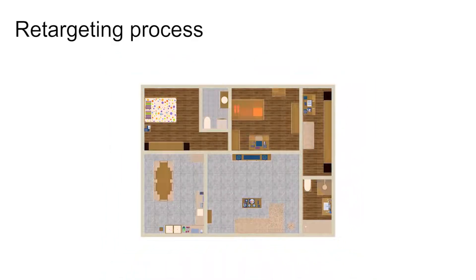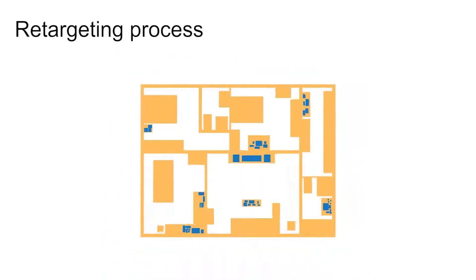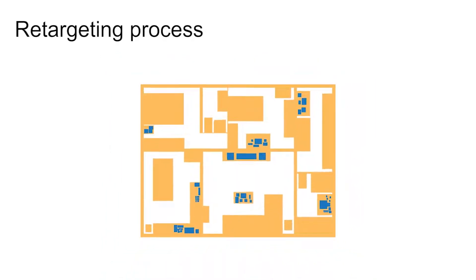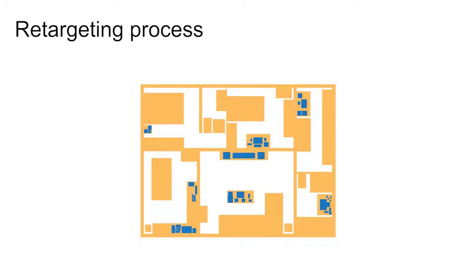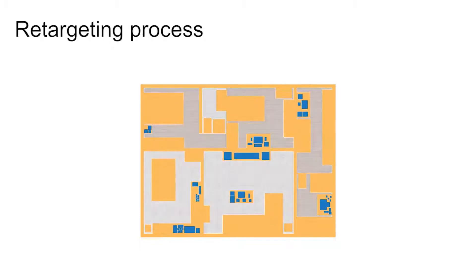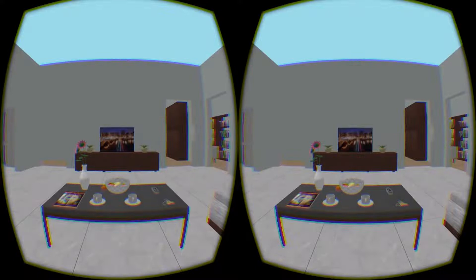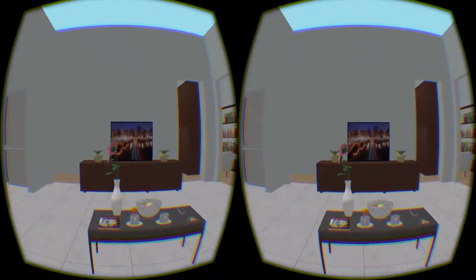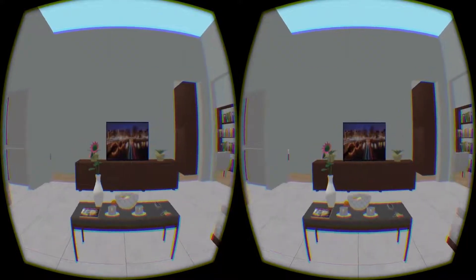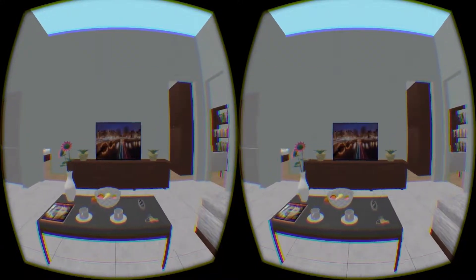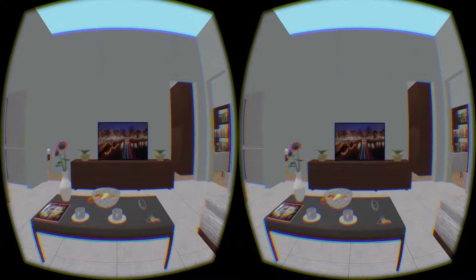The key idea is to move the salient objects in the virtual scene while preserving visual and perceptual similarities. To this end, we preserve the original size, layout position, and visibility of objects during the optimization process.